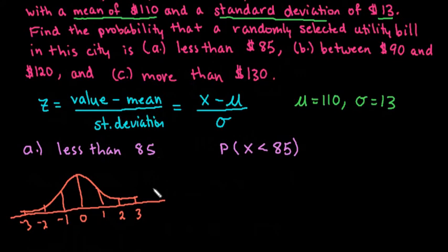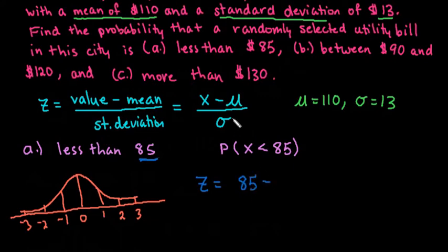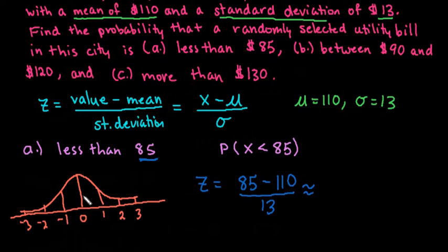To find the probability that x is less than 85, we convert it to a z-score to see approximately where it falls, and then we can use a table. Our x value is 85, minus the mean of 110, divided by the standard deviation of 13. Since we have a value that is below the mean, we're going to have a negative z-score. Plugging this into a calculator gives us negative 1.92308.